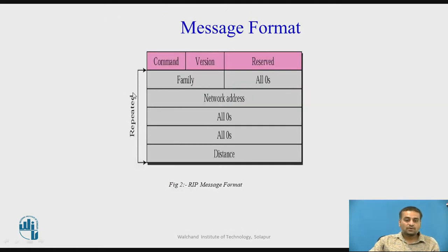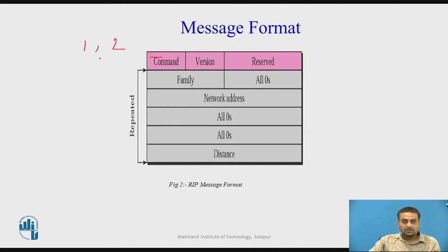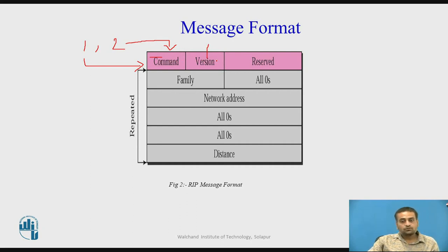Let's see the message format of routing information protocol. The first field is an 8-bit command field that gives the type of the message — whether it is a request message or a reply message. For a request message it has value 1; for a response message it has value 2. The next field is an 8-bit version field that gives the version of RIP. RIP comes in two versions — version 1 and version 2 — so this field contains value 1 or 2 according to the version being used.